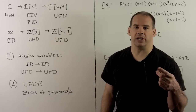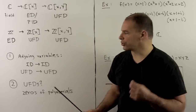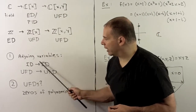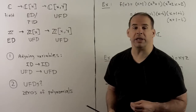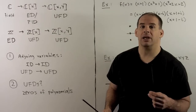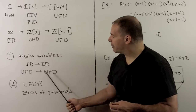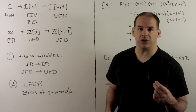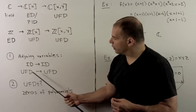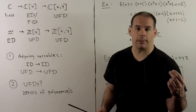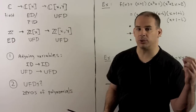So the first question is: if we keep adjoining variables, how bad can things get? The answer is: if we start with an integral domain and form polynomials with another variable, what comes out is still going to be an integral domain. Likewise, if we start with a unique factorization domain and adjoin a variable, that polynomial ring will also have unique factorization. To show the UFD property, we'll need Gauss's lemma, and from that we'll get Eisenstein's criterion for irreducibility, which is very useful.